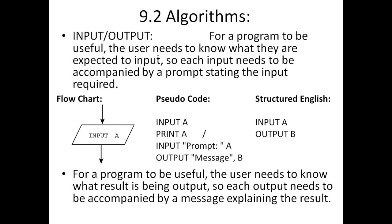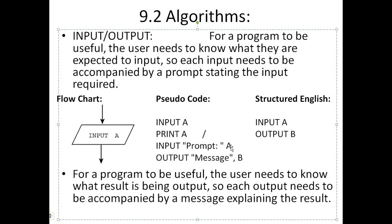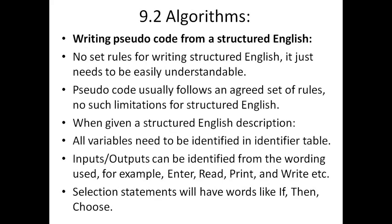For a program to be useful, the user needs to know what they are expected to input, so each input must be accompanied by a prompt. In pseudocode: 'INPUT prompt, a' — this displays the message in quotes and stores the user's input in the variable. 'OUTPUT message, b' displays the label followed by the value of the variable. In structured English, we use the keywords INPUT, OUTPUT, and ACCESS. Each output also needs to be accompanied by a message explaining the result.